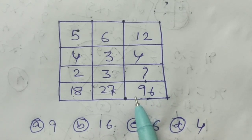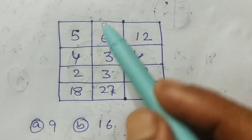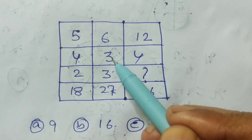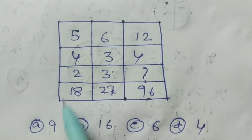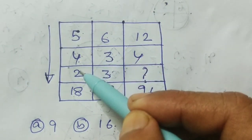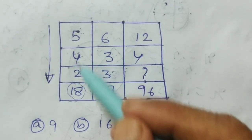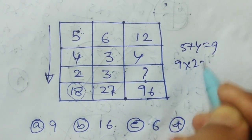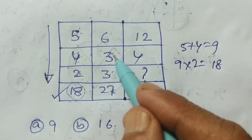Look here — this result is 18. Trying row addition: 5 plus 4 is 9, 9 plus 2 is 11 — not 18. 6 plus 3 is 9, 9 plus 3 is not 27 — never possible. So think in the other direction: 5, 4, and 2. To make 18: 5 plus 4 equals 9, and 9 into 2 equals 18. Applying the same rule: 6 plus 3 is 9, 9 into 3 is 27.